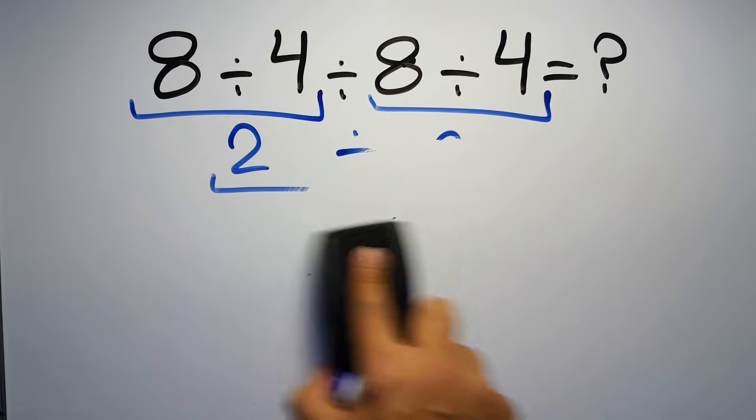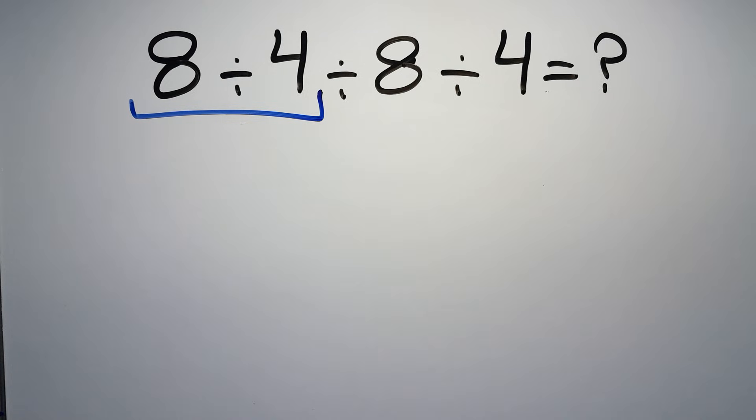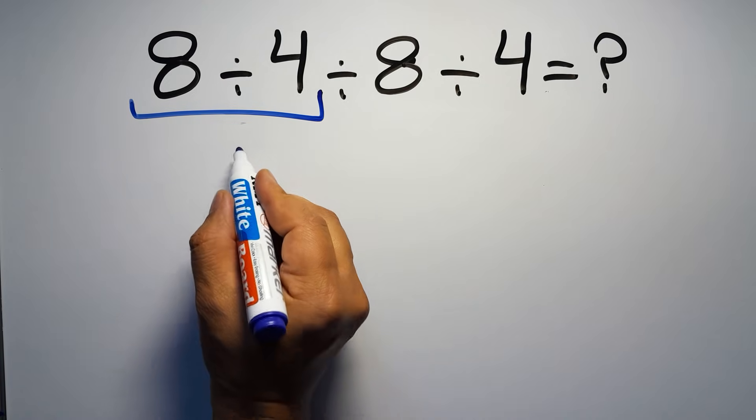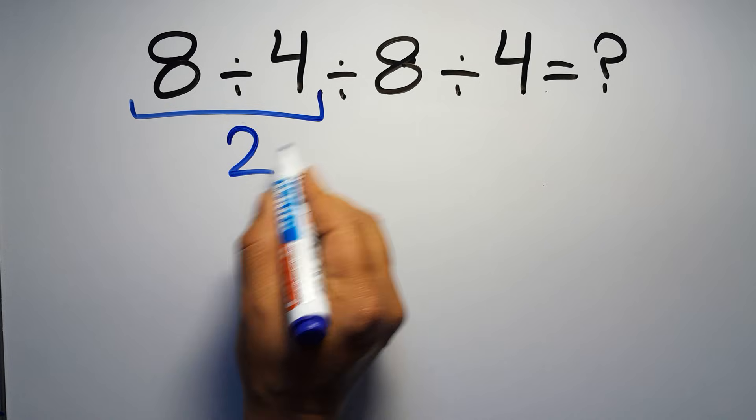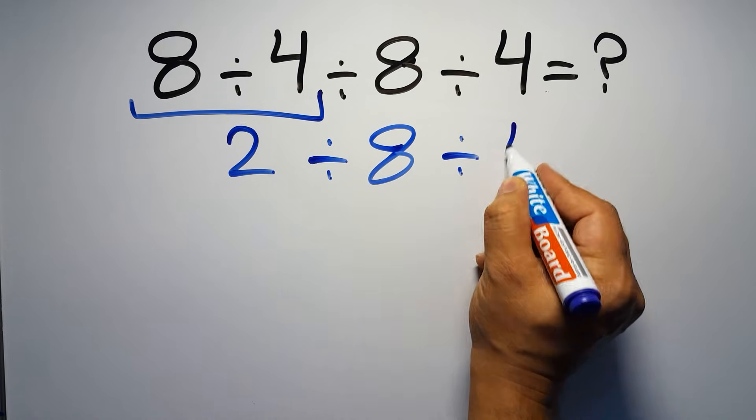so first we have to do this division, 8 divided by 4, which equals 2, so 2 divided by 8, and divided by 4